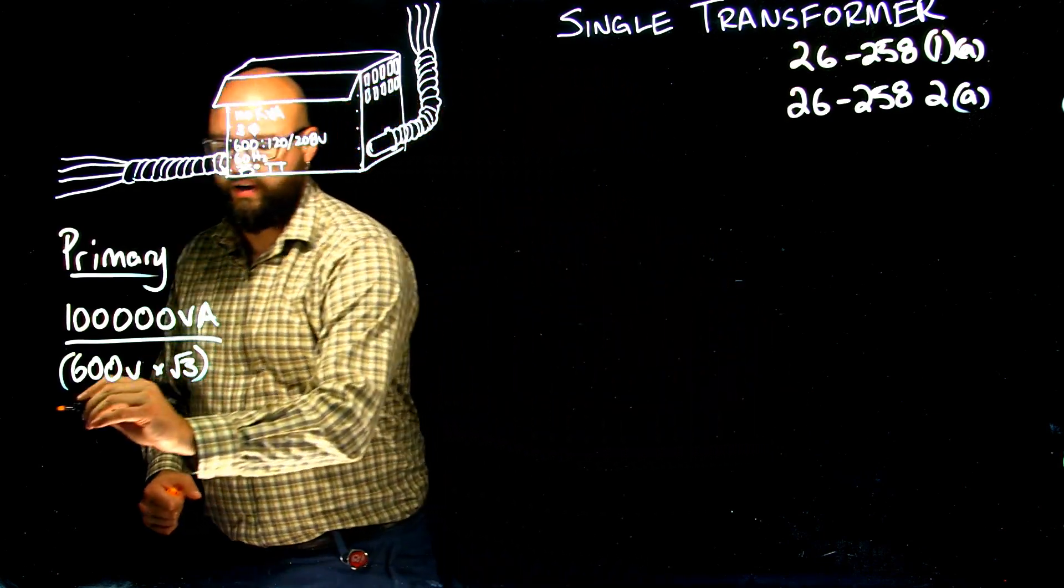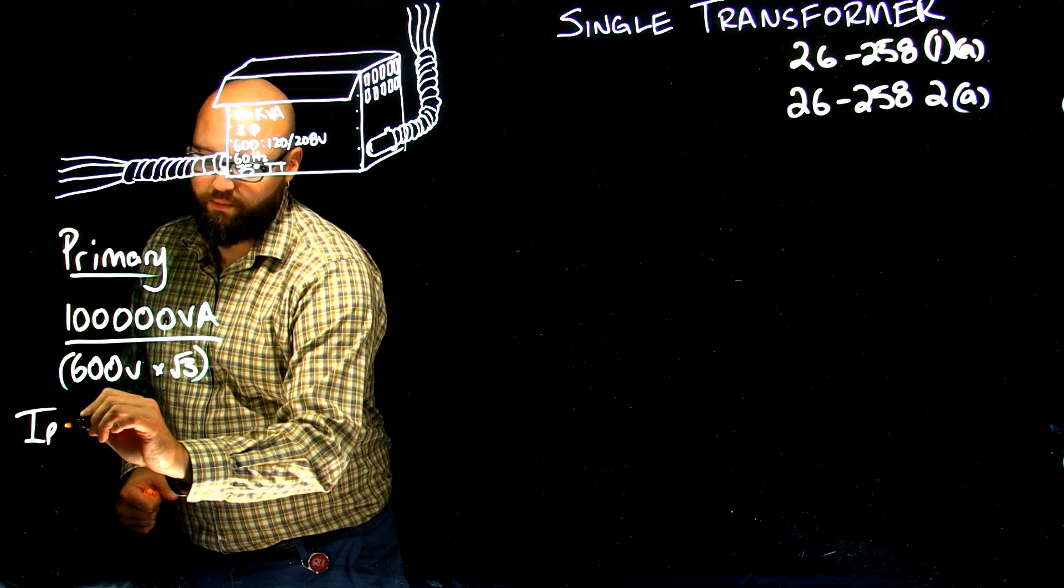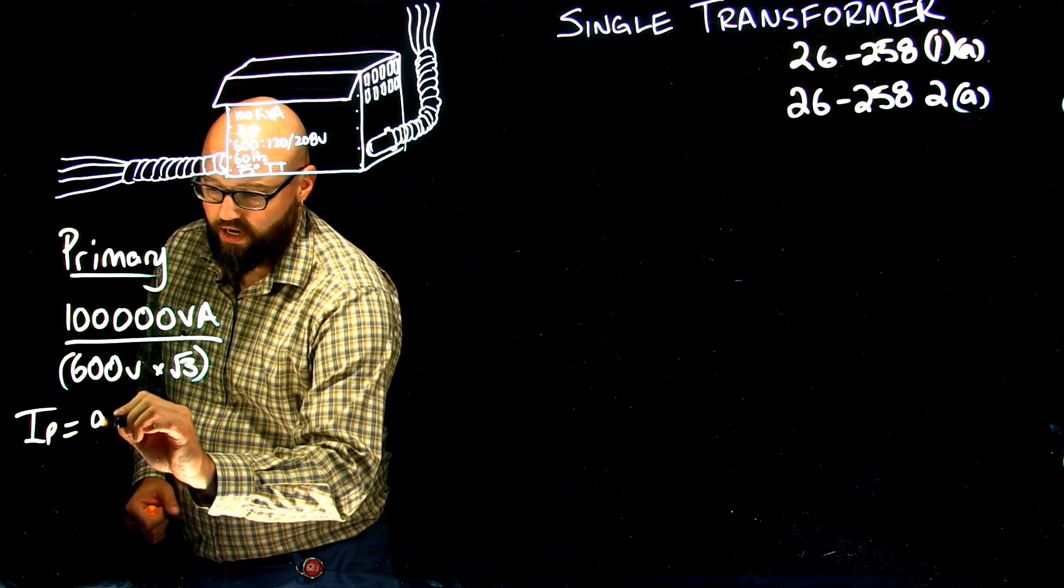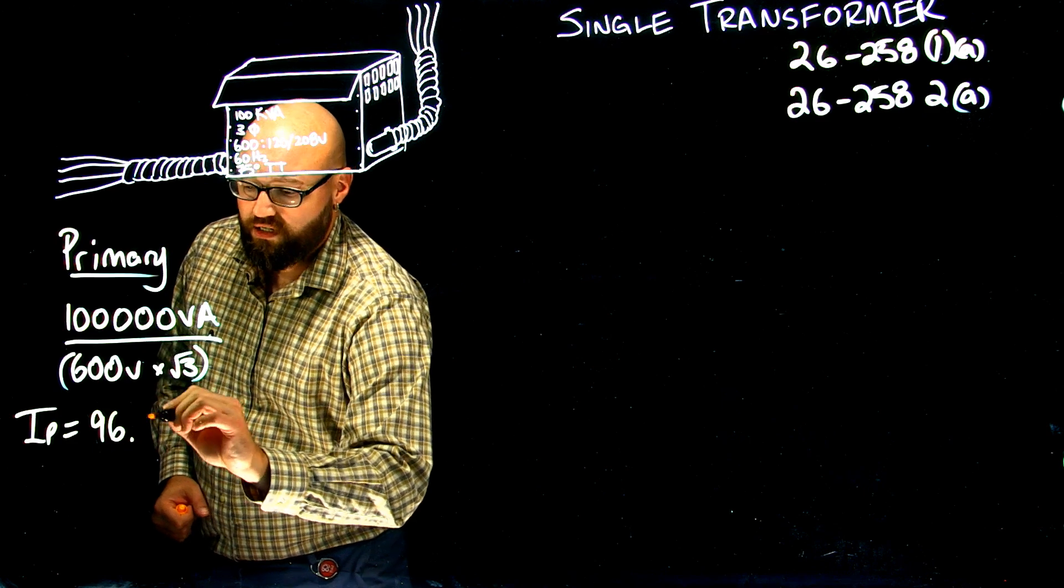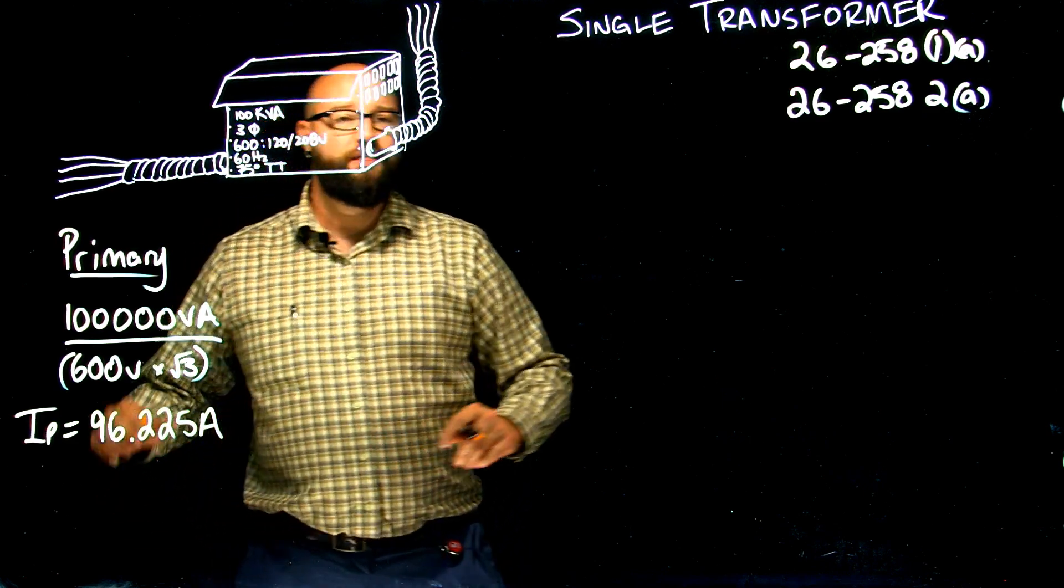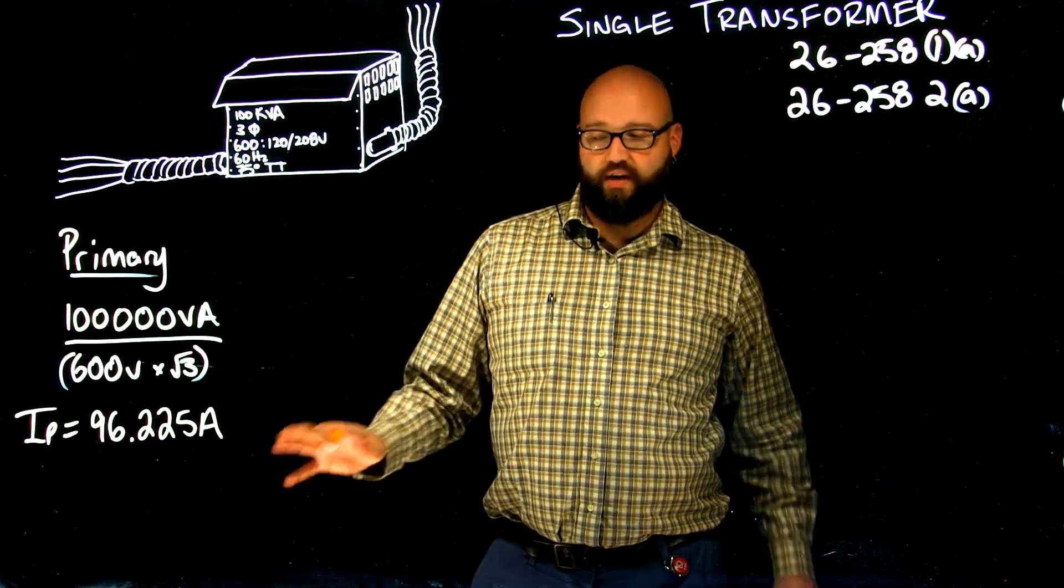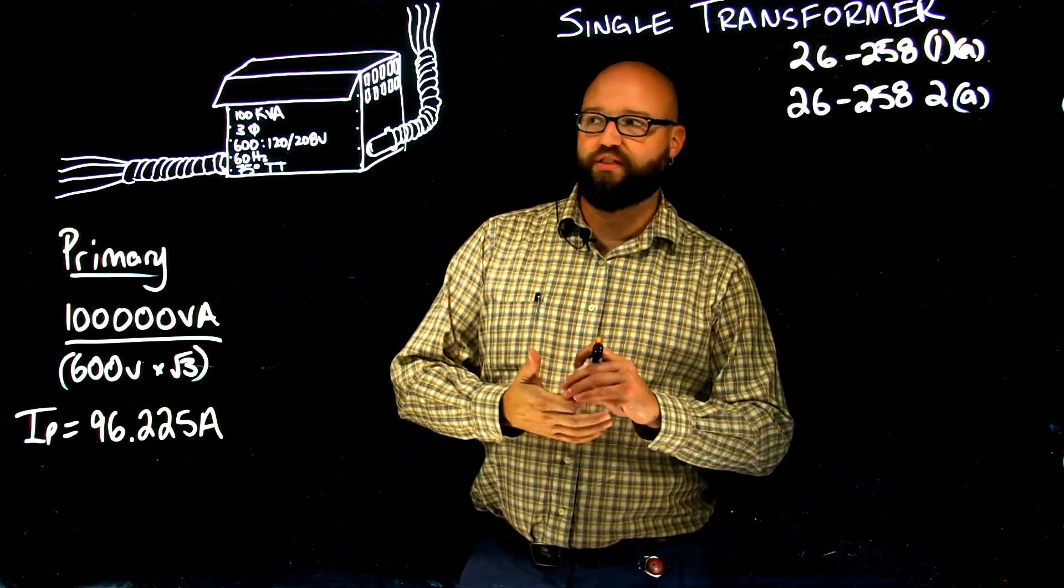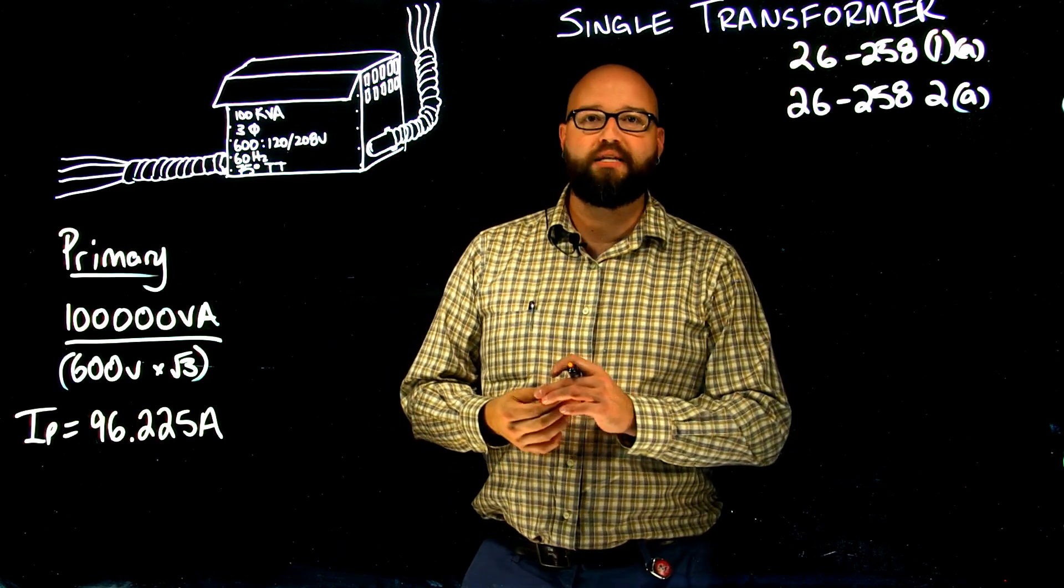We punch those numbers in. What we find out is current on the primary, rated at full load, is 96.225 amps. That is my rated primary current. That is what the current on the primary will be when I'm operating my transformer at the full 100 kVA load capacity.